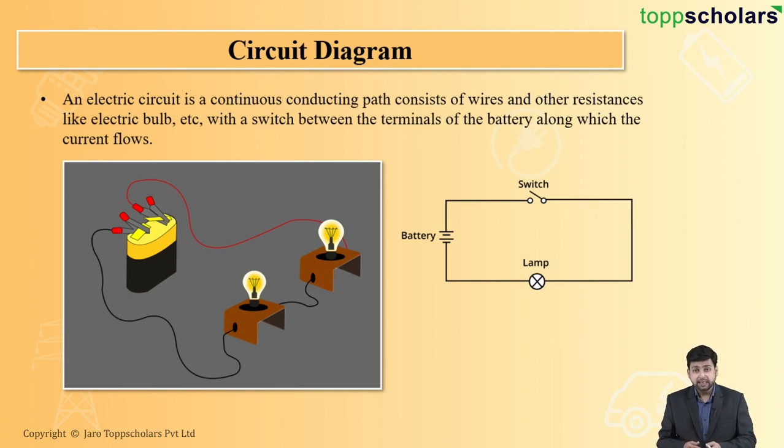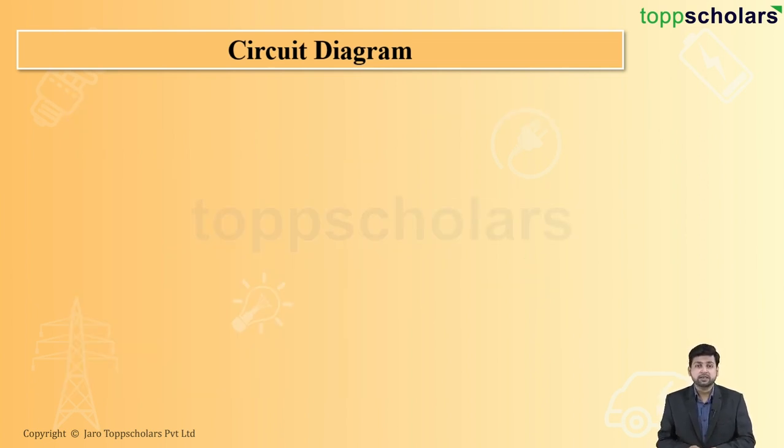And there is a lamp. The lamp behaves as a resistor. So this is nothing but a simple circuit diagram. Now let's talk more about a circuit diagram.